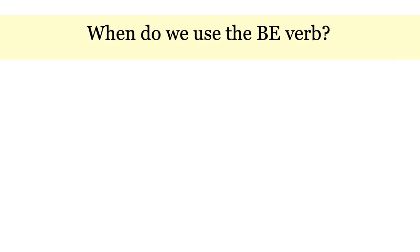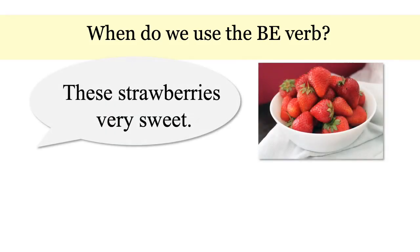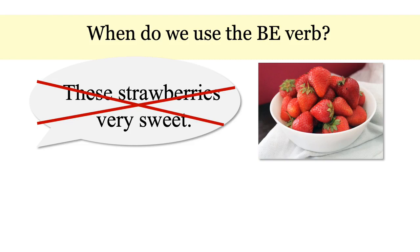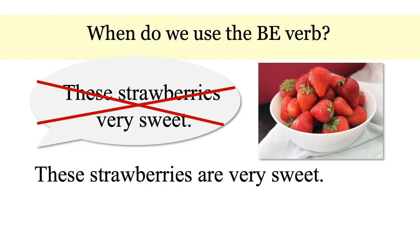If you say, these strawberries very sweet, I understand, but the grammar is incorrect. There is no verb in the sentence, and every sentence needs a verb. So we use the BE verb: The strawberries are sweet. ARE is the BE verb that connects the strawberries to the adjective sweet.